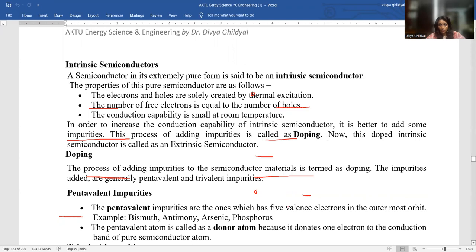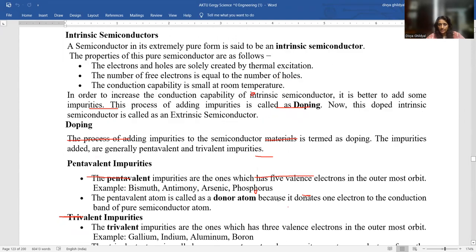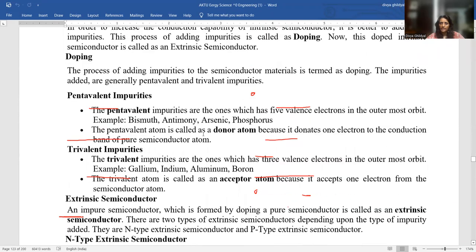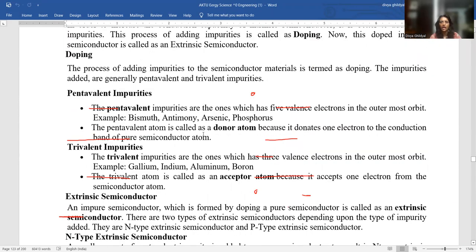Doping. This section A question: what is meant by the term doping? The process of adding impurities is known as doping because the impurities added are generally pentavalent, penta means five, and trivalent, tri means three. The pentavalent impurities have five electrons in their outermost orbit. Example: phosphorus, most common. Pentavalent atom becomes a donor atom.